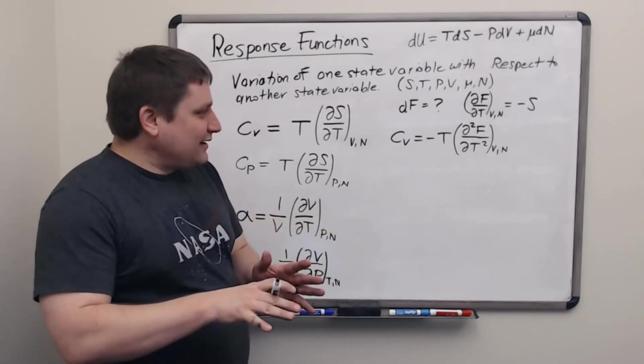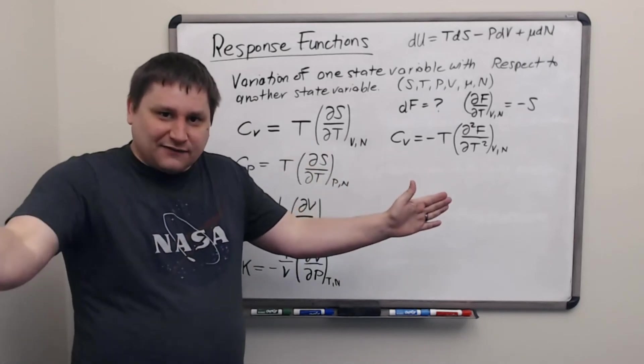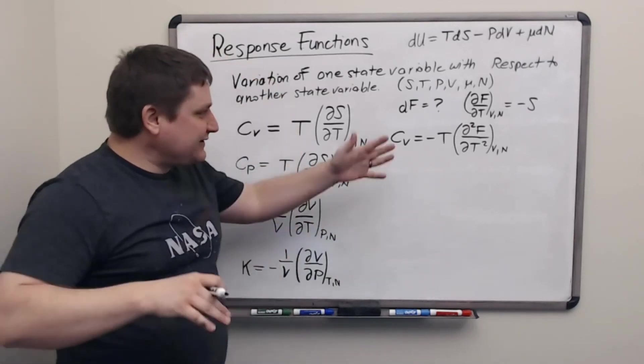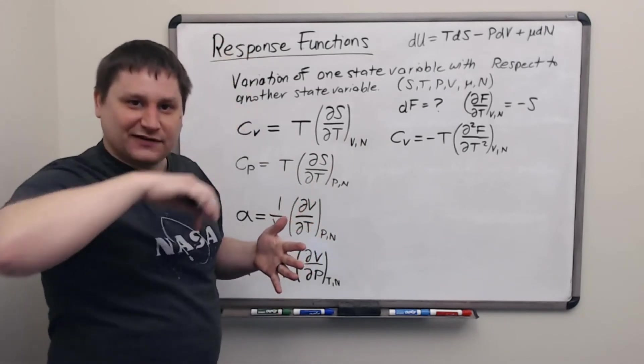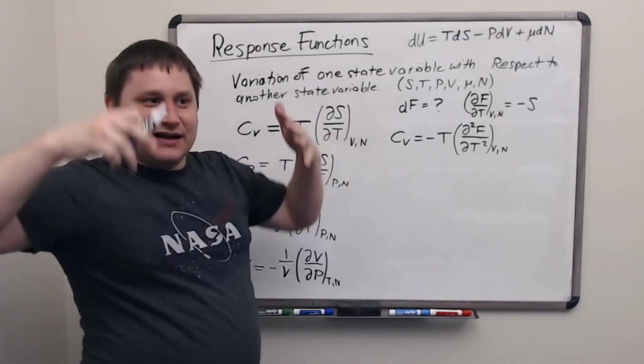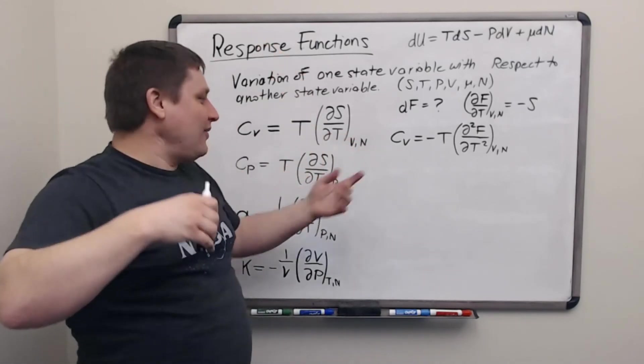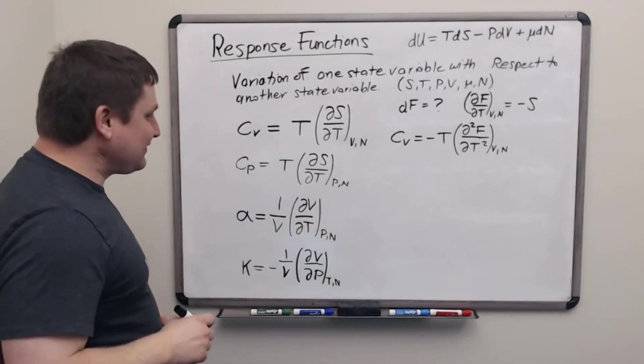If you plot it like a two-dimensional surface versus temperature on one axis and volume on the other one, you get this two-dimensional surface. And the second derivative is related to the curvature, the concavity of that surface. So you've got this really abstract thermodynamic potential. Its curvature. Oh, that's the heat capacity. It's so neat. Let's look at the other ones.